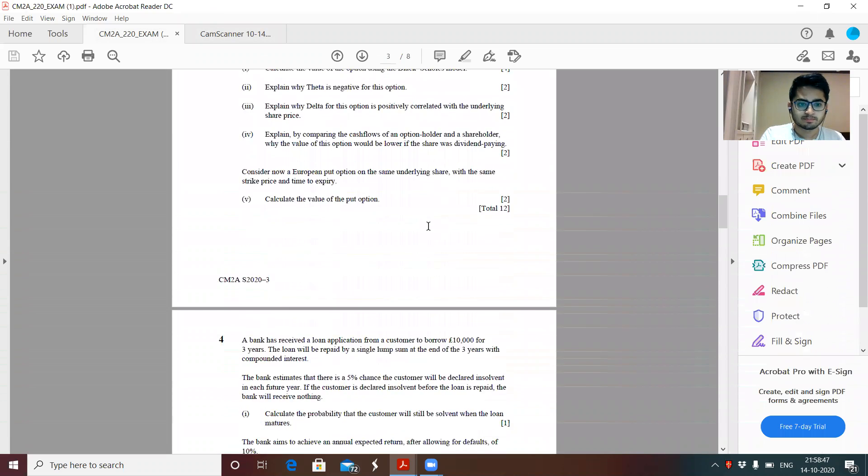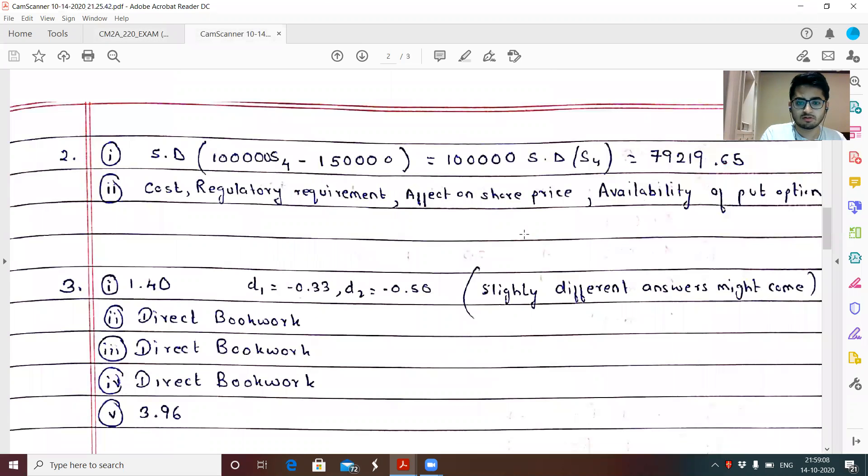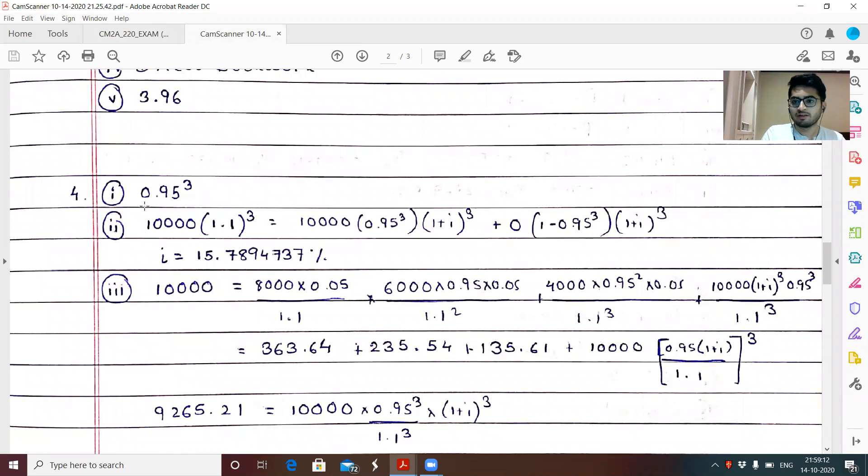Fourth question. This was one of those questions which quite a lot of students simply left it or they weren't able to work exactly how this would work. This was slightly different question than what is asked, but then well prepared students should have been able to solve it. So this is the solution. First part probability of no default 0.95 cube. Next part to find the expected rate of interest, which the bank should charge. It intends to get an expected rate of return of 10%. So 10,000 times 1.1 cube is equal to it receives an amount of 10,000 times 1 plus I cube with probability that it does not default 0.95 cube. It will get zero if it defaults. So this term will be zero. Solving this, I would be getting as 15.79% up to two decimal places.